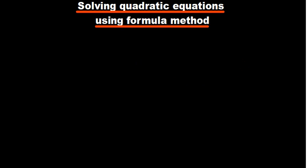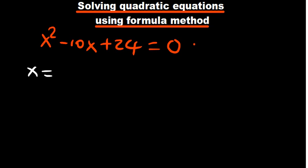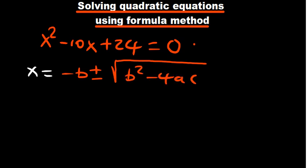Let's say we have x squared minus 10x plus 24 being equal to 0. Then you are asked to solve using the formula. So remember our formula is saying x equals negative of b plus or minus the square root of b squared minus 4ac divided by 2a.